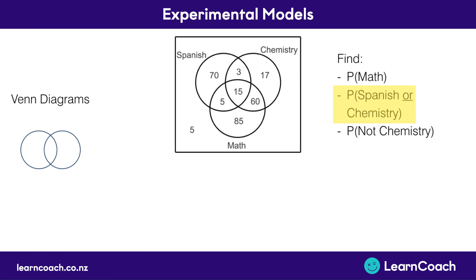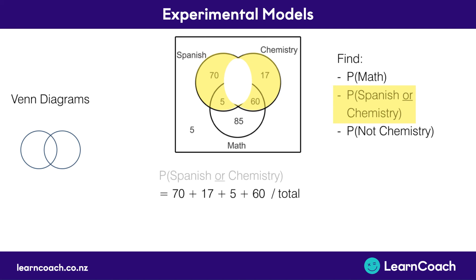Now for the probability of Spanish or chemistry, we highlight those circles but eliminate the intersection between Spanish and chemistry, because the question wants Spanish or chemistry, not the combination of both. We add the highlighted numbers and divide by the total: 70 plus 17 plus 5 plus 60, divided by 260, which equals 152 divided by 260, giving us 0.585.